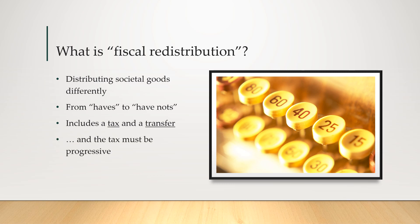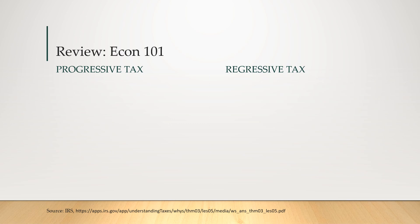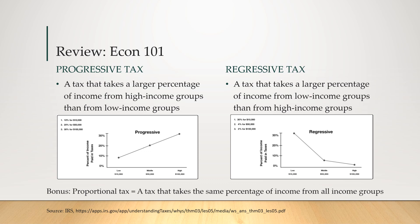Most definitions of fiscal redistribution also say the tax must be a progressive tax. It's worth talking about what that means. Progressive taxes versus regressive taxes: a progressive tax takes a larger percentage of income from high-income groups than from low-income groups — on a percentage basis, not just in absolute dollars. Our income tax in the United States is relatively progressive.